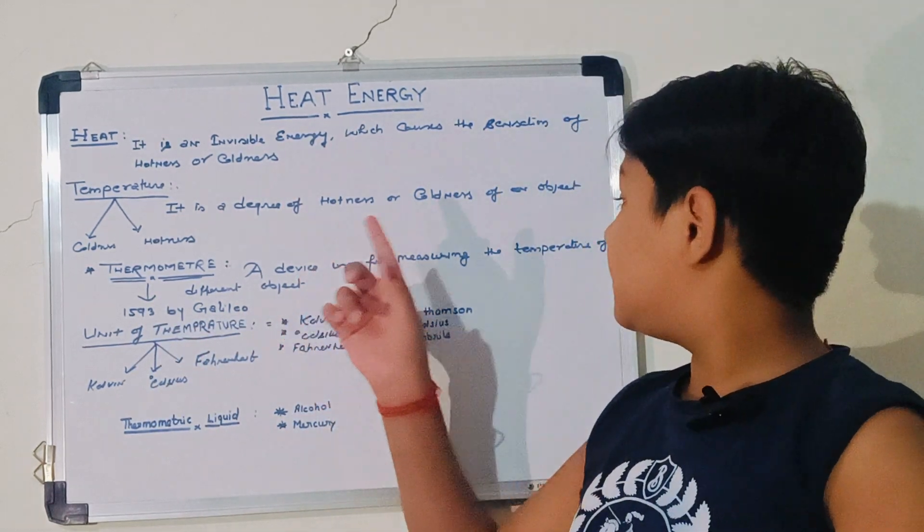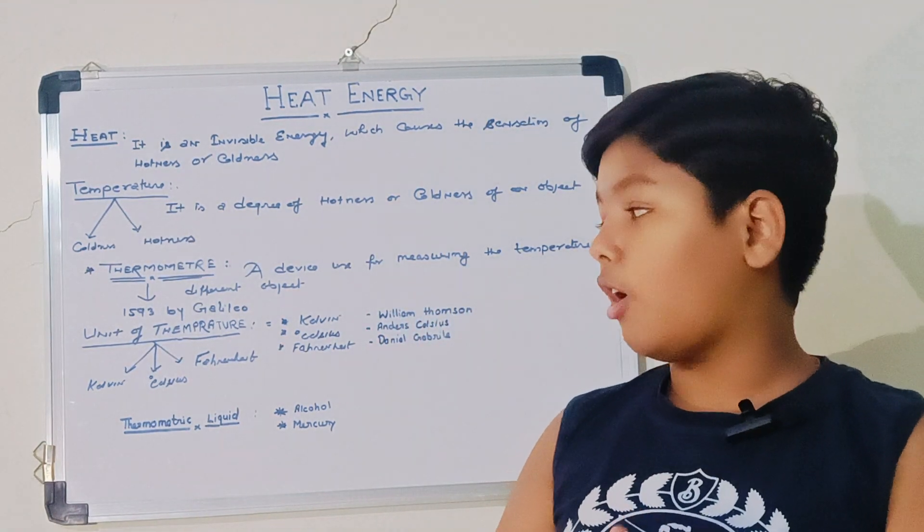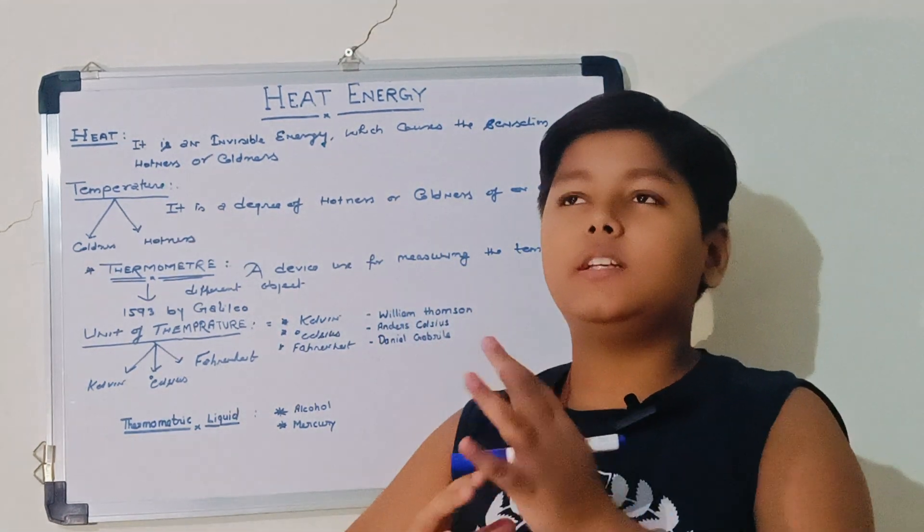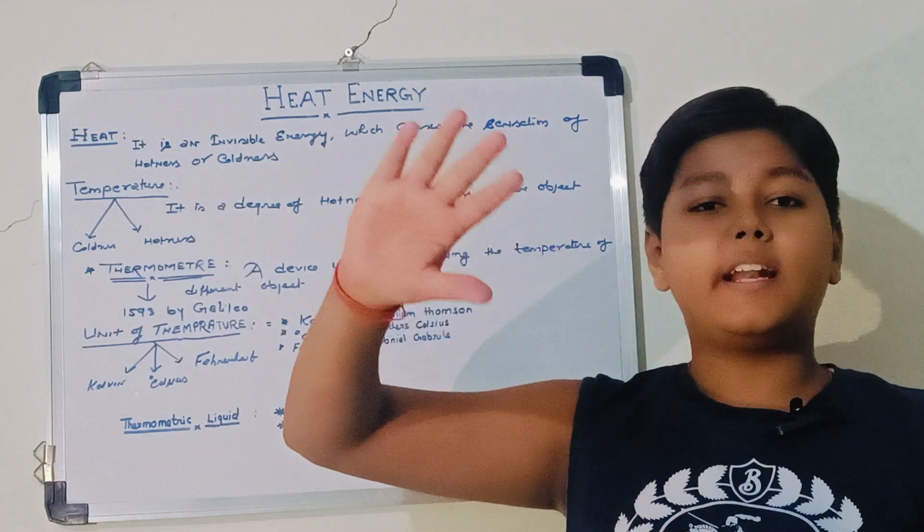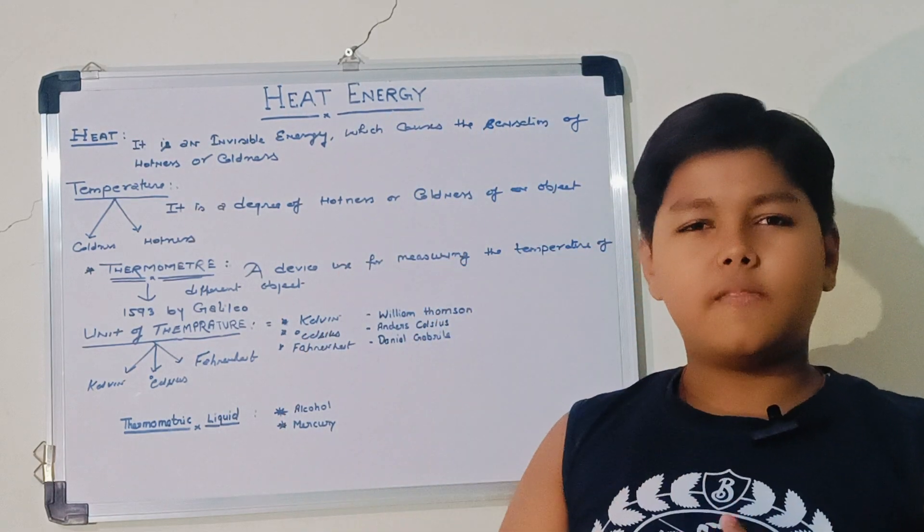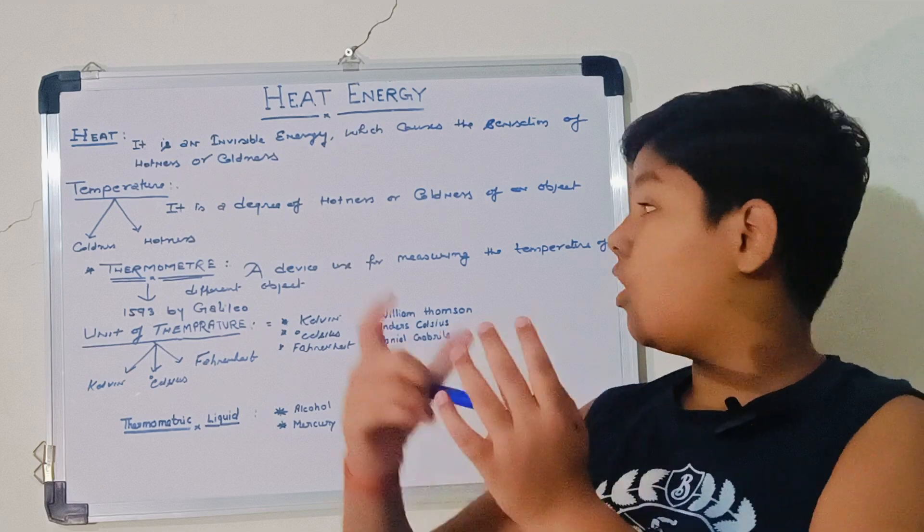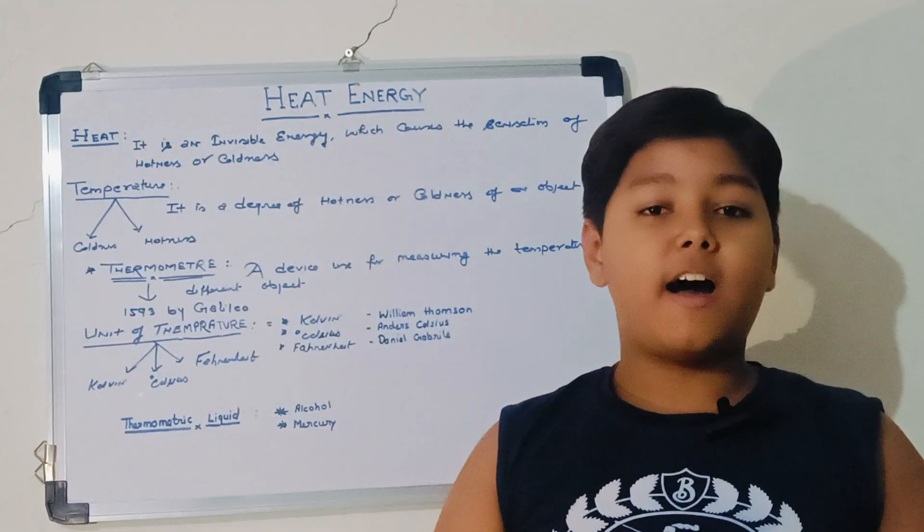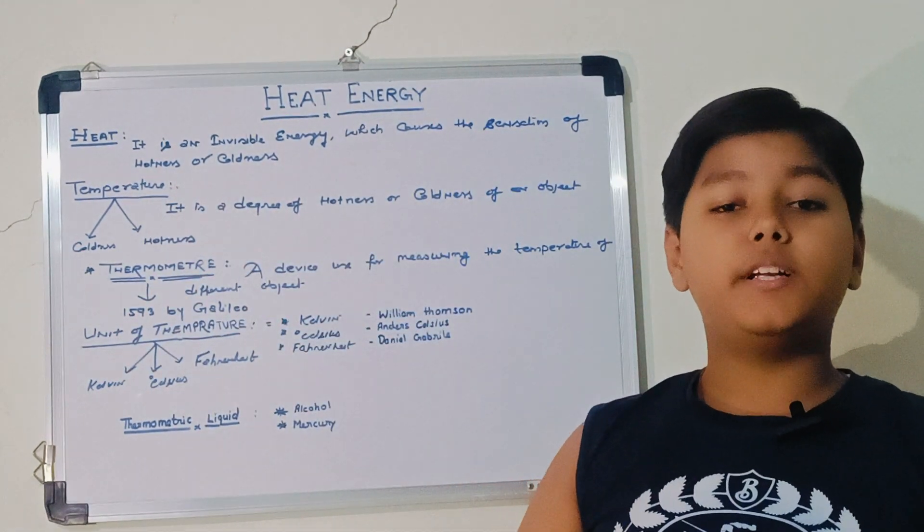It is a device for measuring the temperature of different objects. So we see in the thermometer there are many labeling like a scale. So what are they? They are the different units of temperature. As thermometer is a device, so it will find some units.